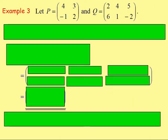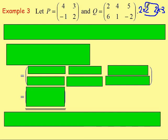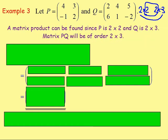Example 3: let P be [4, 3; -1, 2] and let matrix Q be [2, 4, 5; 6, 1, -2]. Can you multiply these matrices together? Matrix P — what is the order? That is a 2 by 2 matrix. And matrix Q — there are two rows and three columns, so that is a 2 by 3 matrix. The inner numbers both being 2 means we can multiply them together. The resulting matrix will be a 2 by 3 matrix.